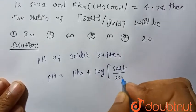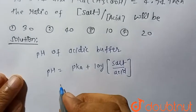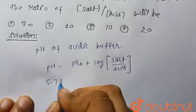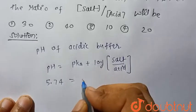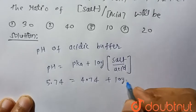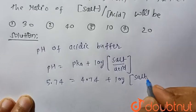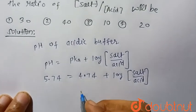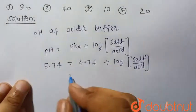It is given in the question that pH of acid buffer is 5.74 and pKa is given 4.74. So we have to find the ratio of salt upon acid.